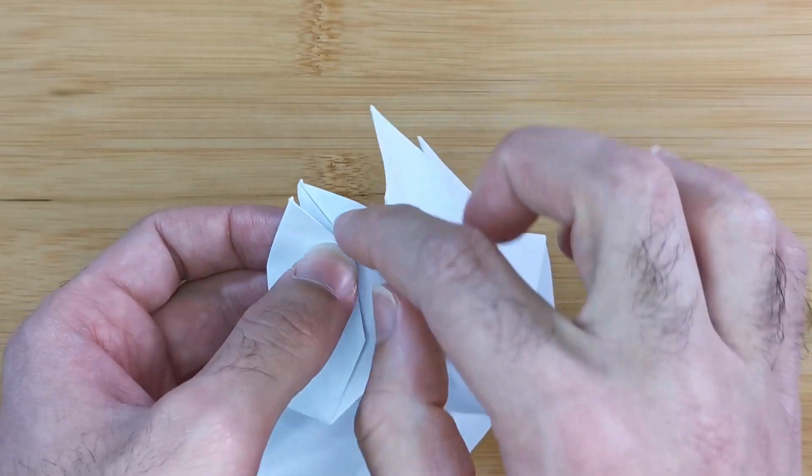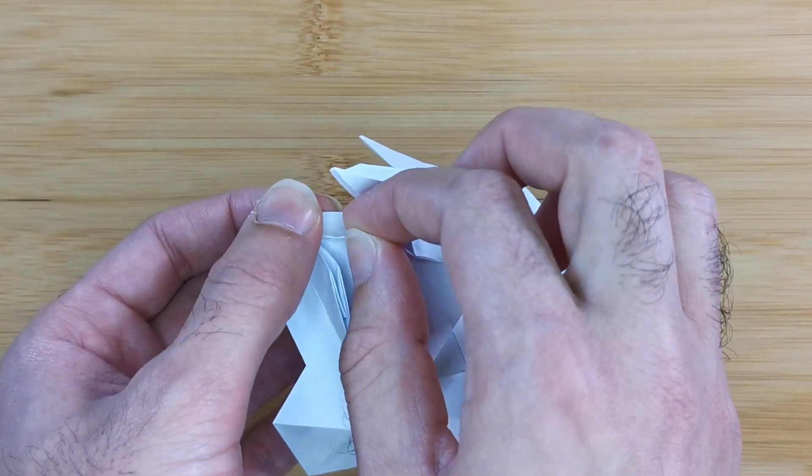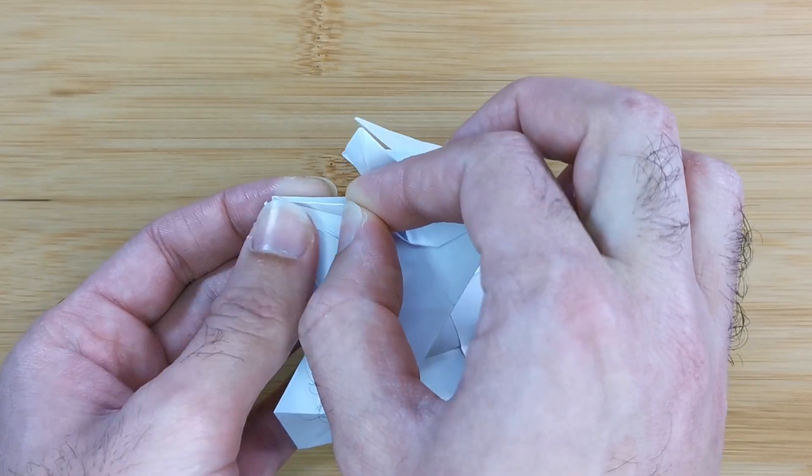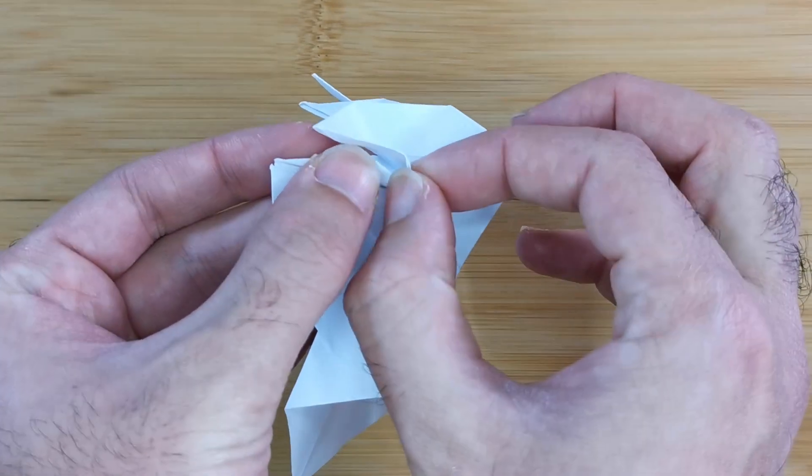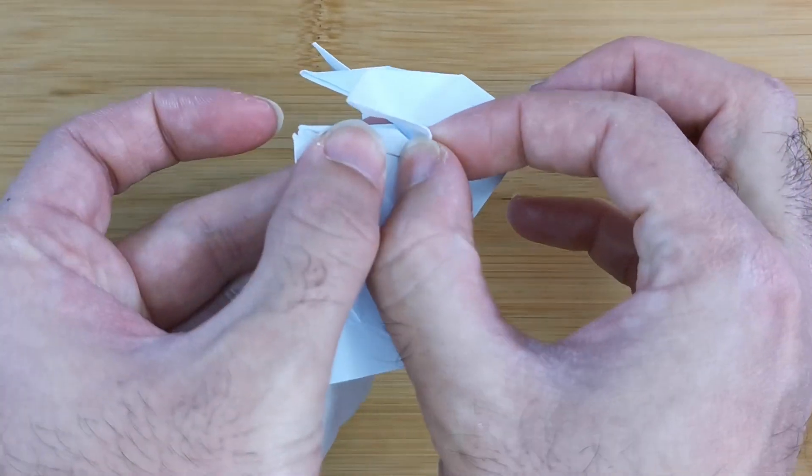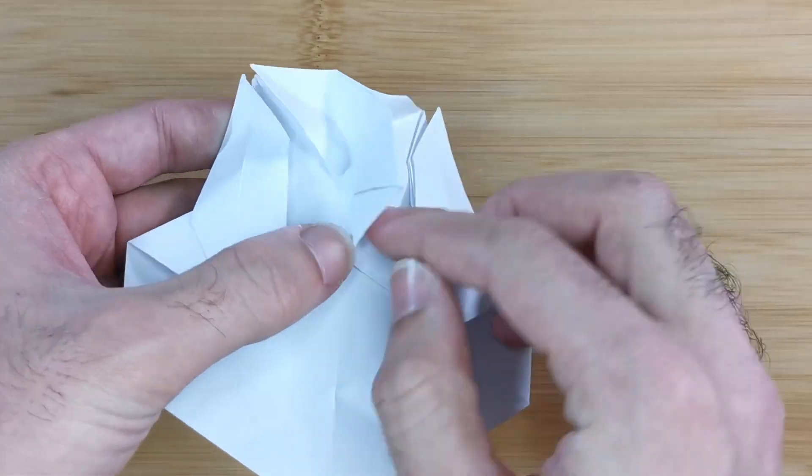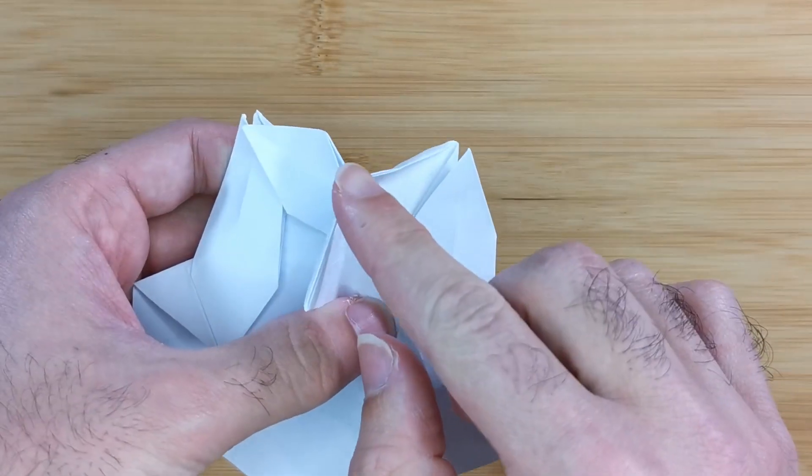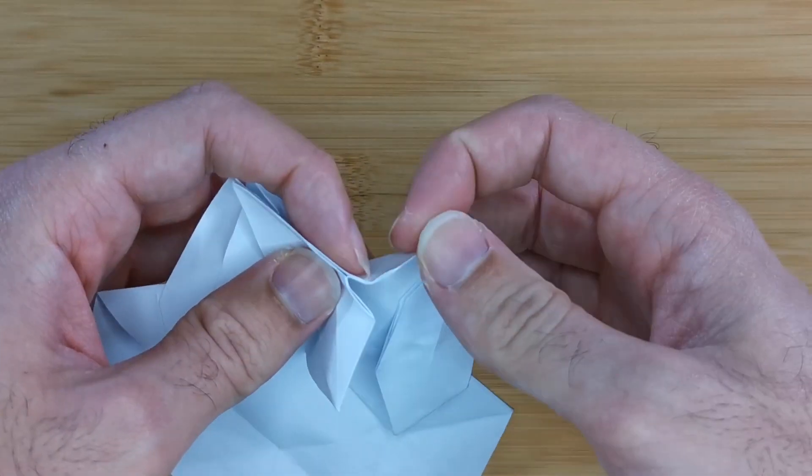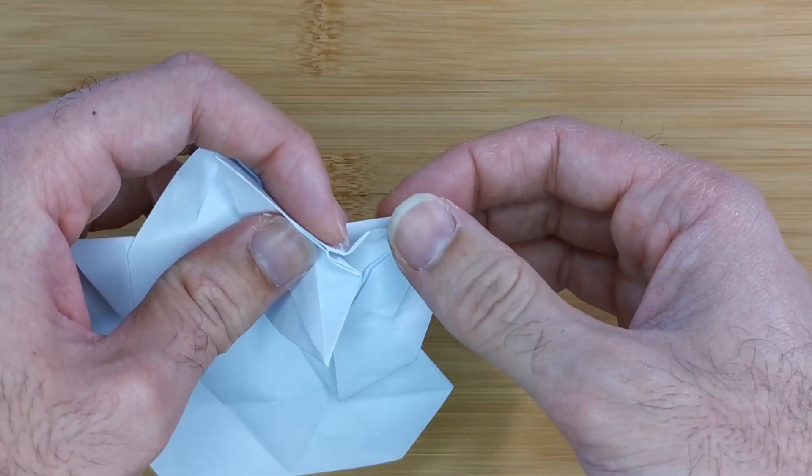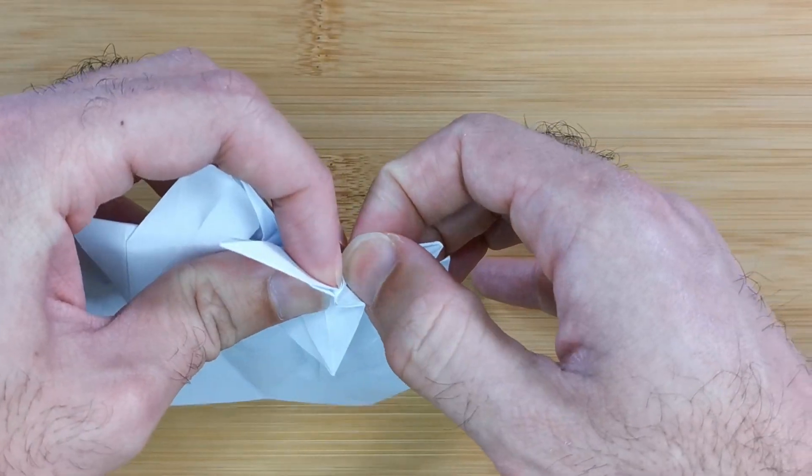Now we're going to bisect this flap by folding this edge to this edge like this and fold until this corner here. And do the same on the opposite side by folding this edge to this edge and bisecting that flap, and fold to the corner like this.